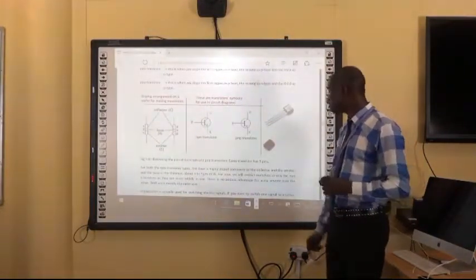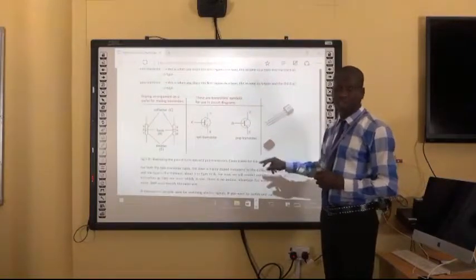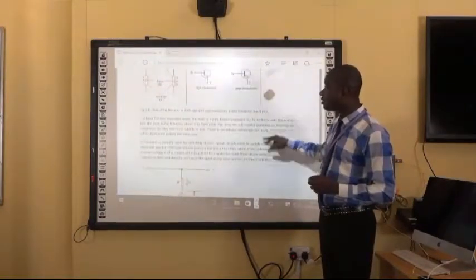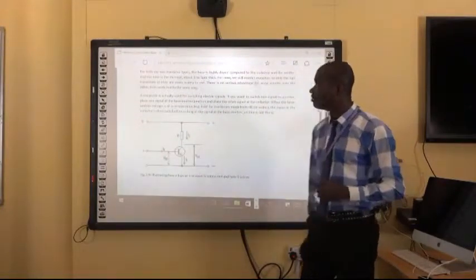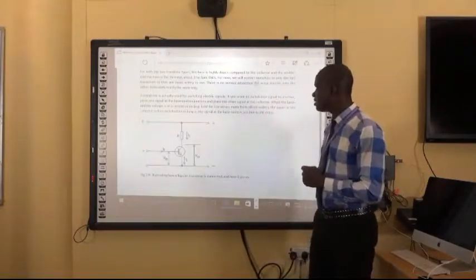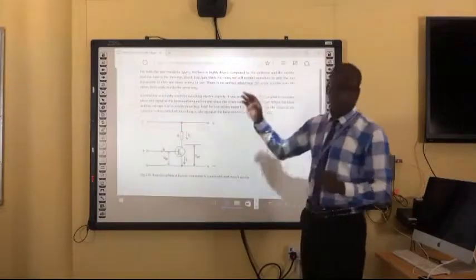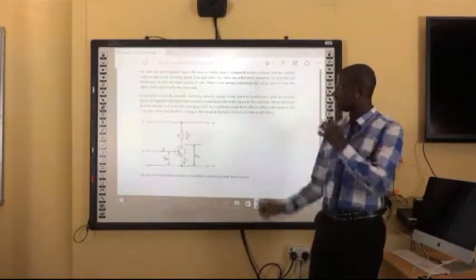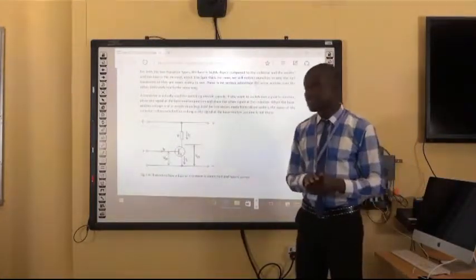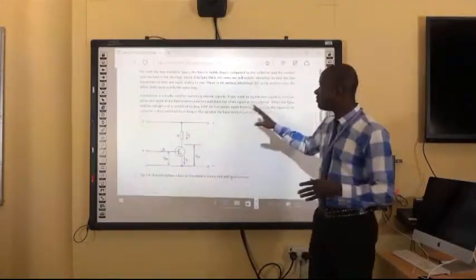This is a diagram of a typical transistor that you commonly find in the market or in stores. For both transistor types, the base is highly doped compared to the collector and the base is thinnest.